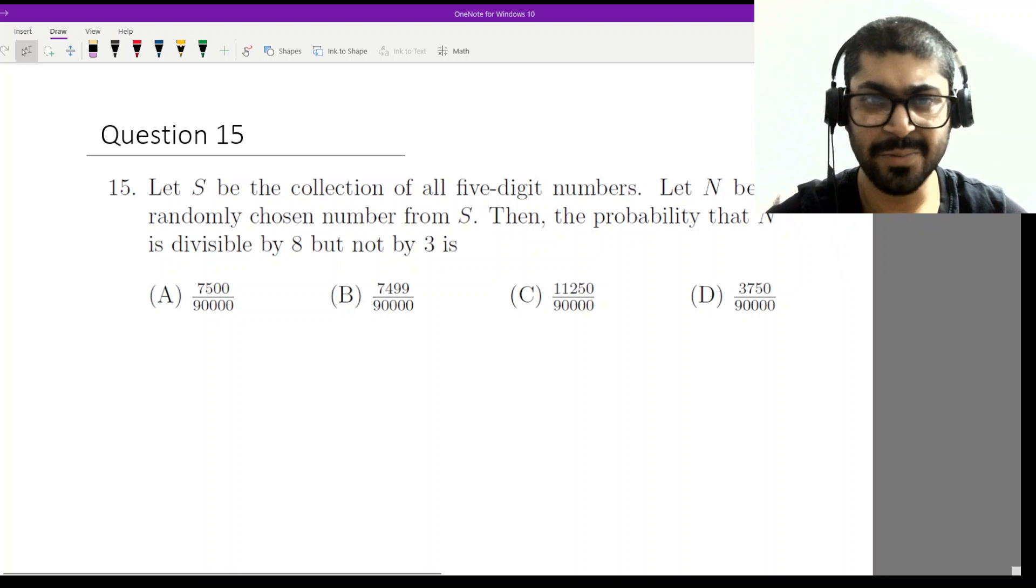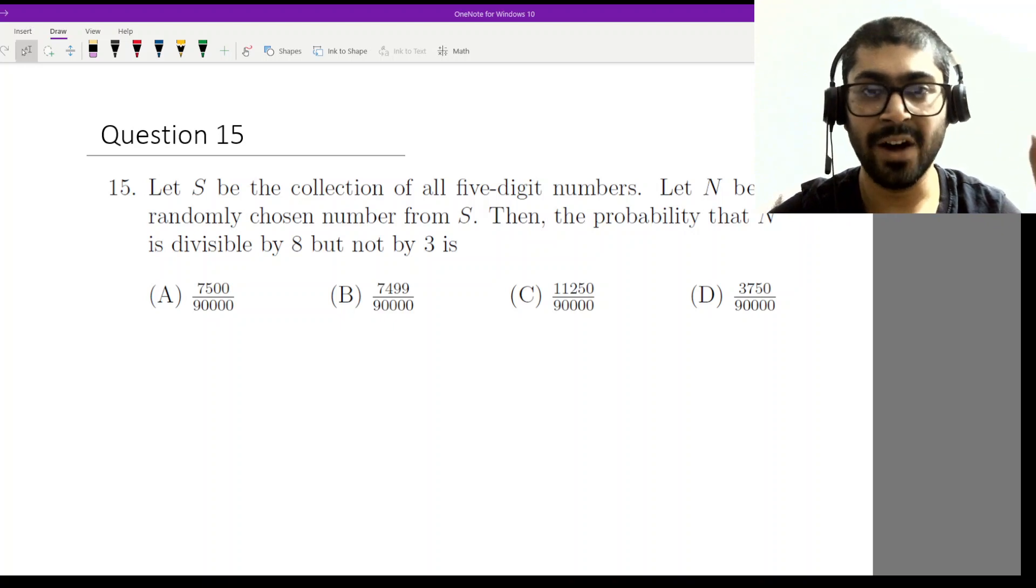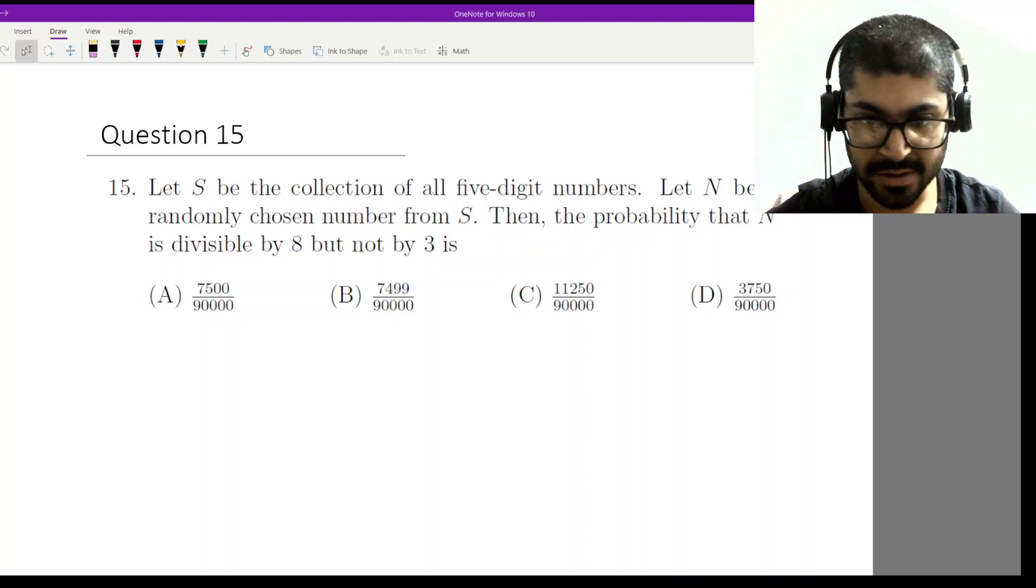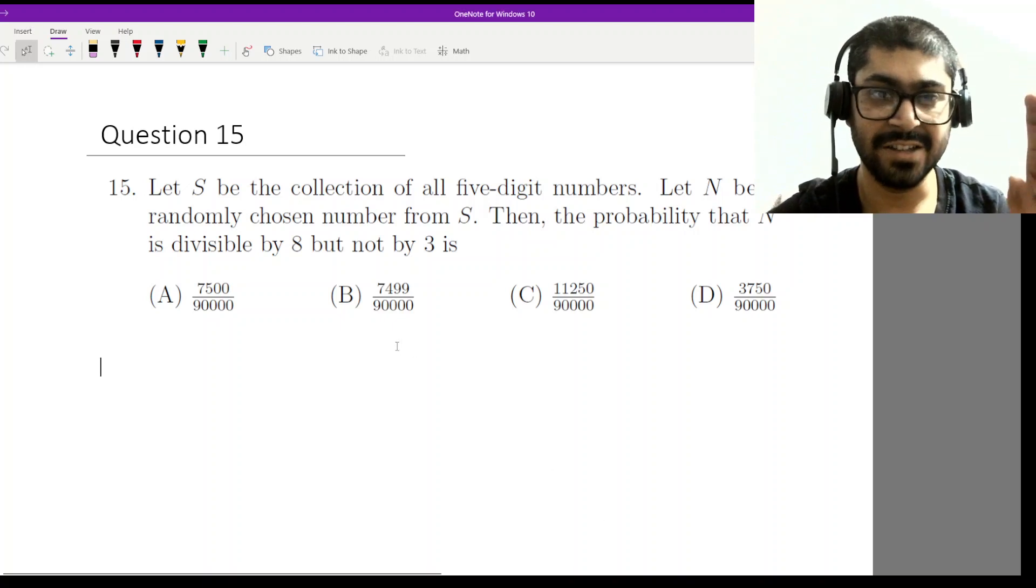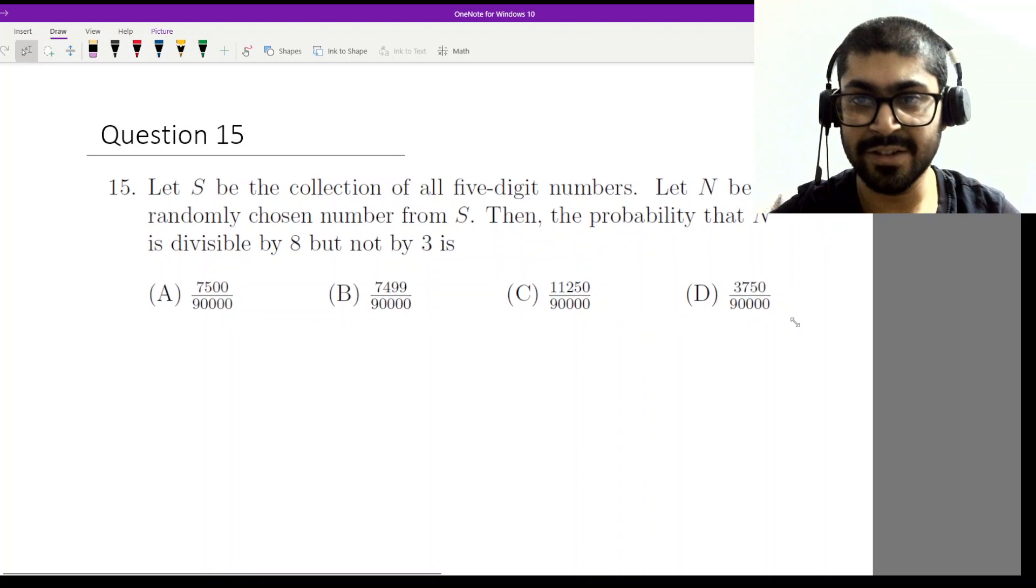First, we have to know what are the different five-digit numbers available to us. It says S be the collection of all five-digit numbers. All five-digit numbers means we start from 10,000 because 9999 is a four-digit number.